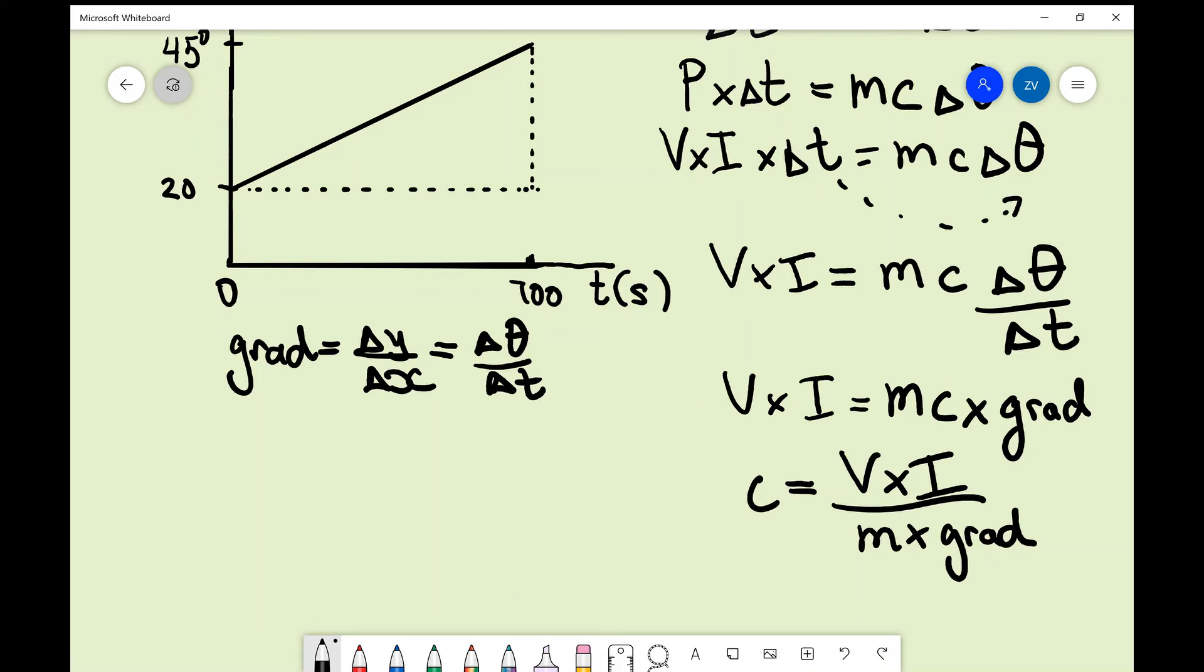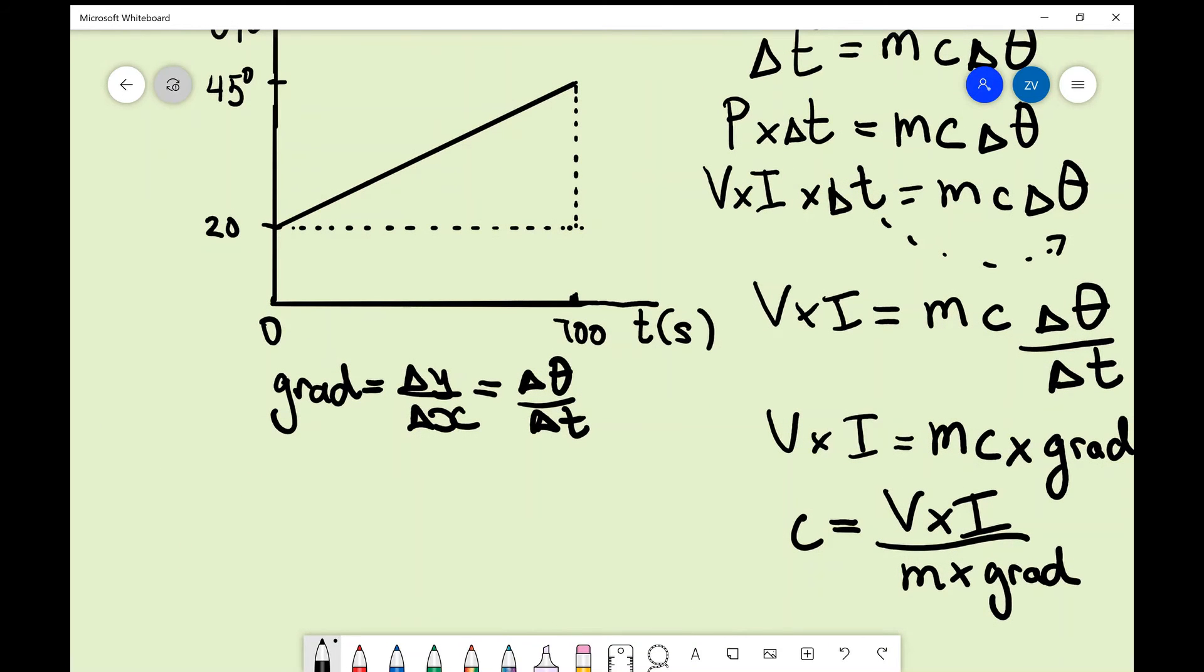In the gradient, just by looking at the graph, our change in temperature is just 25 degrees. So our gradient is going to be 25 divided by 700 seconds.